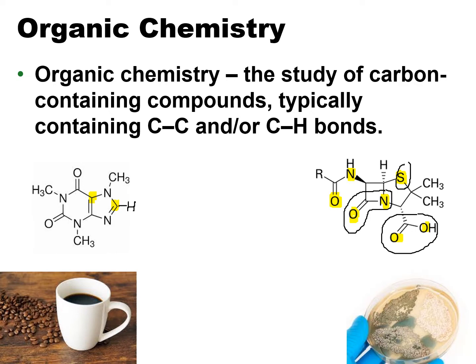R is not an element you can find in the periodic table. R is what we write when we don't want to commit to a specific group of atoms connected there — we're just saying there's something there, and it can be different depending on circumstances. It's called the radical — that's why it's the letter R — and it just means there's going to be something more there. It's like customizing your car: you can add a certain color or certain type of seats, that's the optional part.